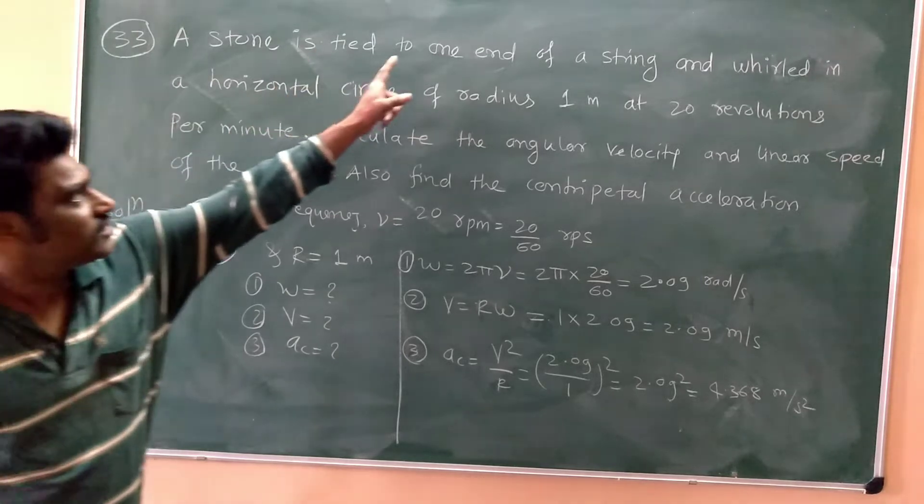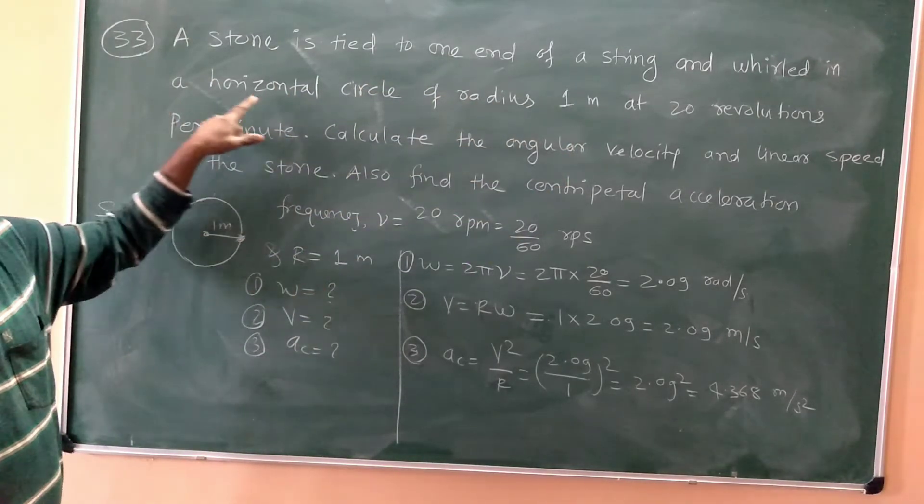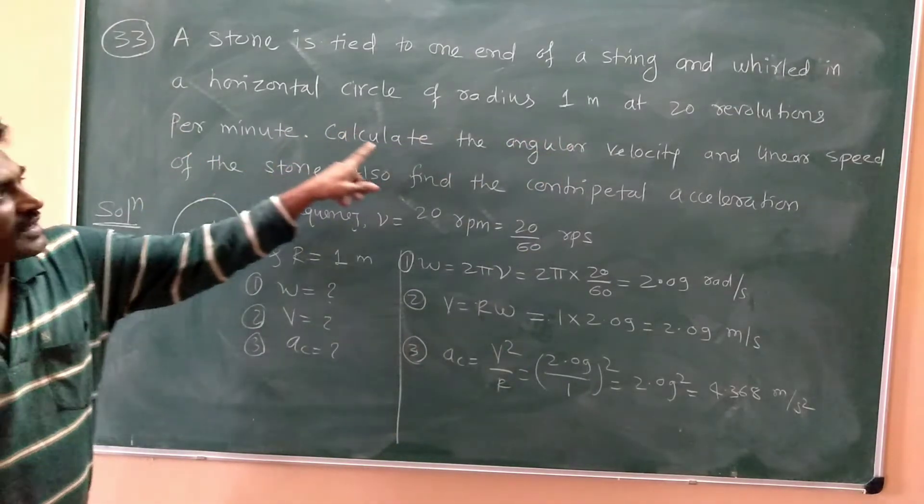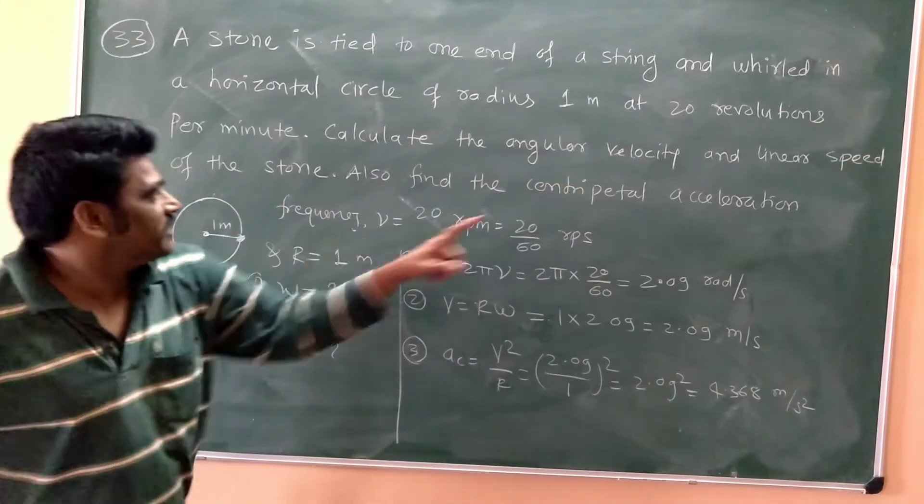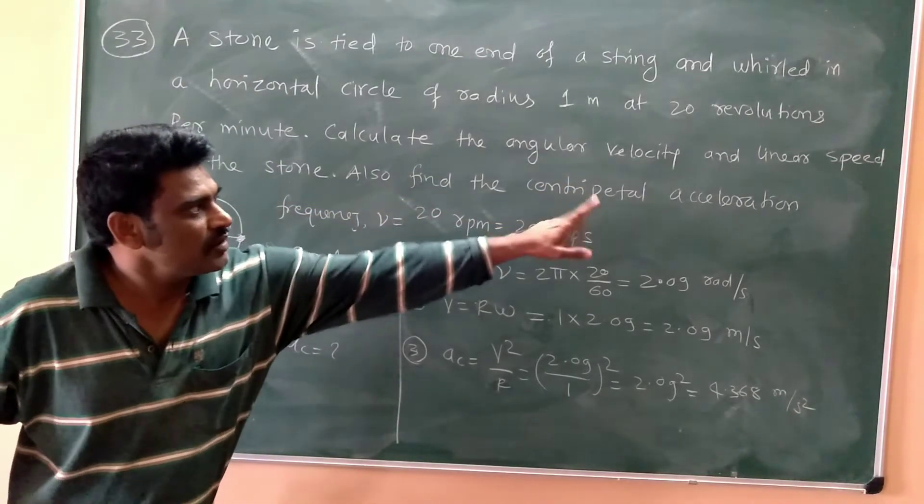A stone is tied to one end of a string and whirled in a horizontal circle of radius 1 meter at 20 rpm. Calculate the angular velocity and the linear speed of the stone, also find the centripetal acceleration.